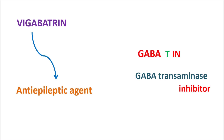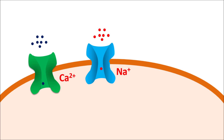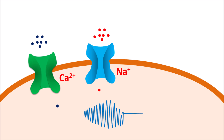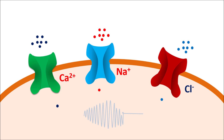By inhibiting GABA transaminase, Vigabatrin inhibits the metabolism of GABA, thereby increasing GABA levels within the CNS. In the CNS, different ion channels play important roles — sodium and calcium channels produce depolarization and neuronal excitation, and when this excitation is excessive it can result in epilepsy. This excessive neuronal excitation can be controlled by chloride channels, which produce hyperpolarization and reduce neuronal excitation. GABA is the neurotransmitter required to open chloride channels and thereby control neuronal excitation.